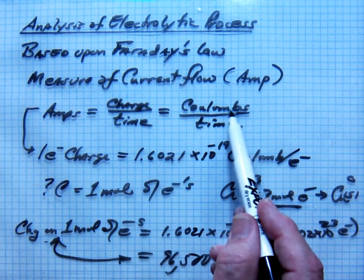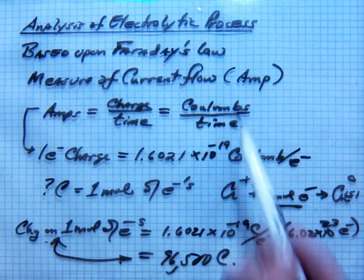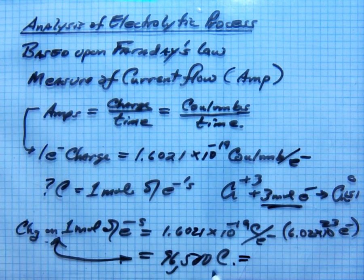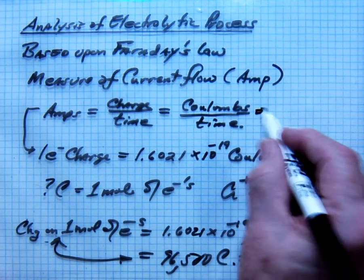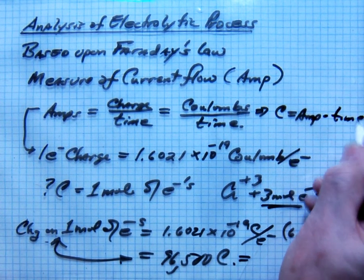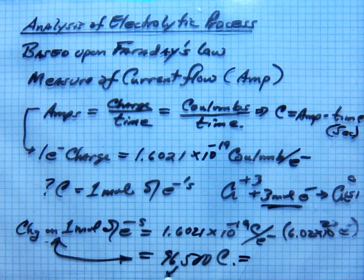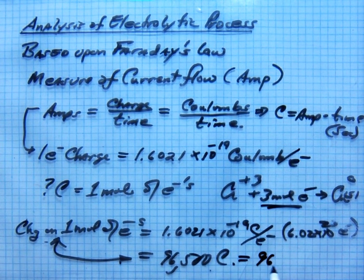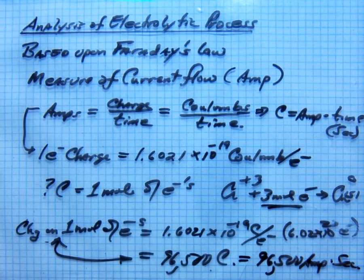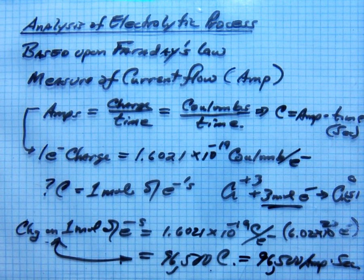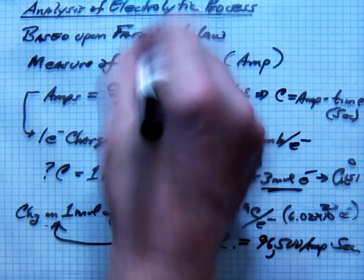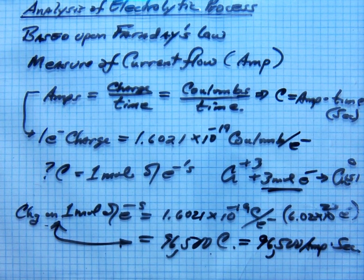Now Coulombs is expressed in terms of the time element and the amps. If you solve this for Coulombs, it would be Amp times a time. Time is usually in seconds. So 96,500 Coulombs is 96,500 Amp seconds. Now, this all boils down to one set of conversion factors, as I'm about to show you.